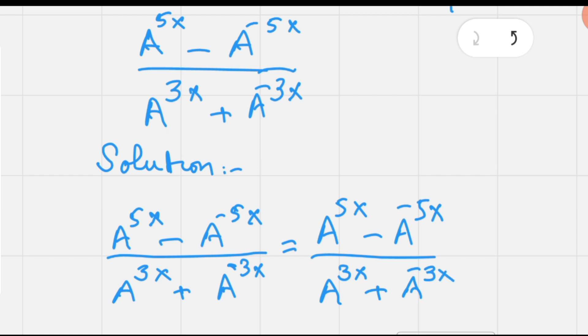Now, multiplying and dividing this fraction by A^(5x), so we have A^(5x) over A^(5x).